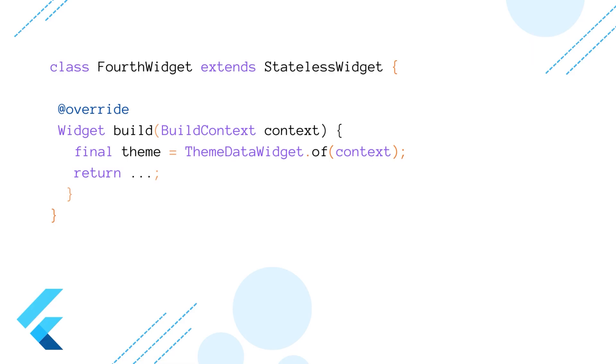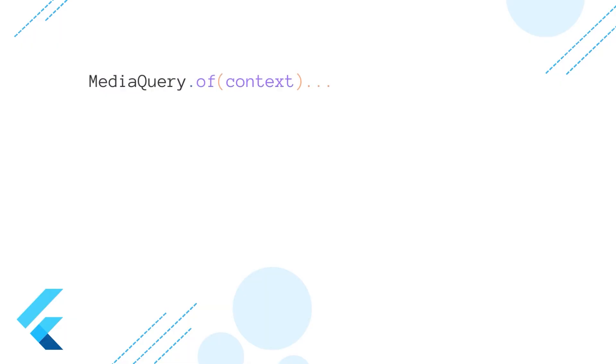We can replace the long method name in our descendant widget with just this: ThemeDataWidget.of(context), which looks pretty simple. As a Flutter developer, you may be familiar with the dot of context pattern, because the Flutter framework uses it in different places, like MediaQuery.of(context) and Theme.of(context).